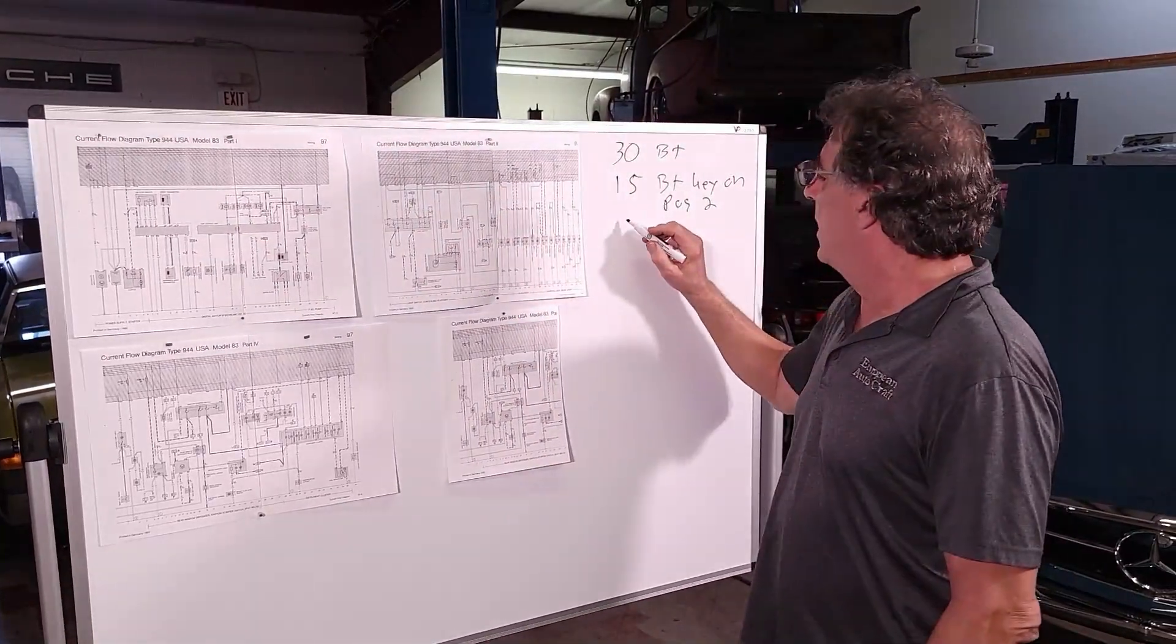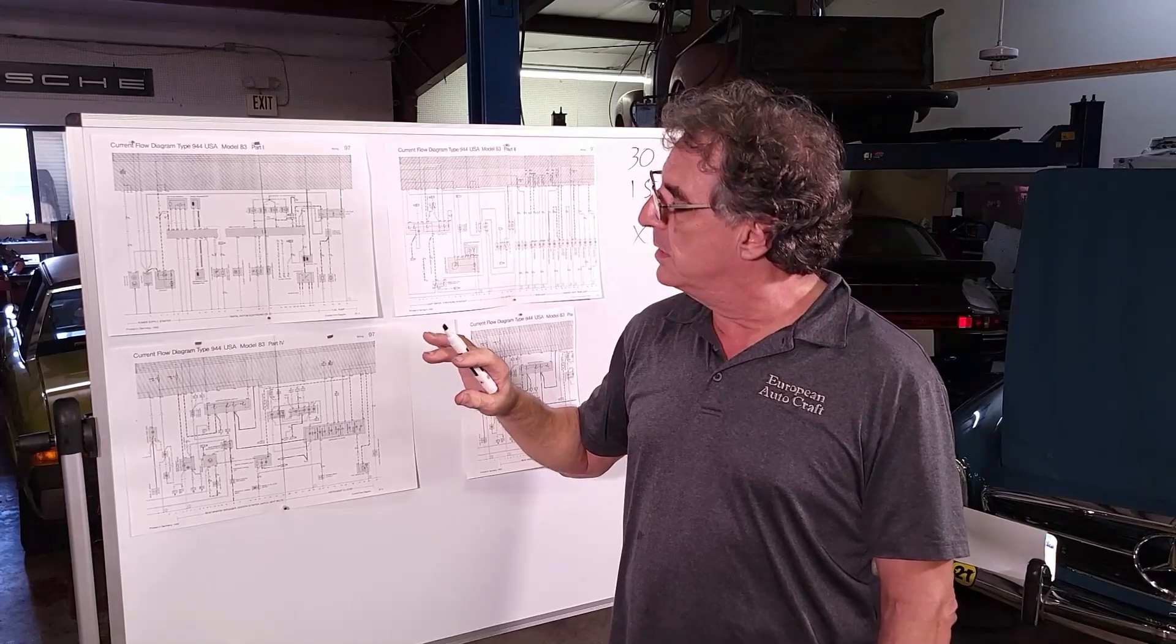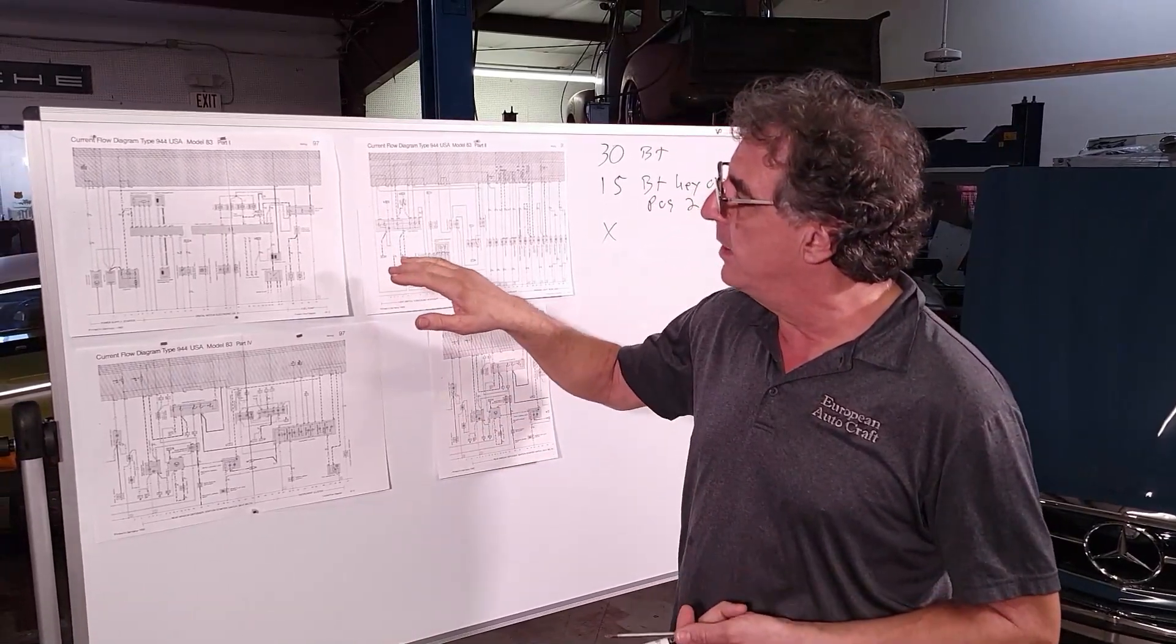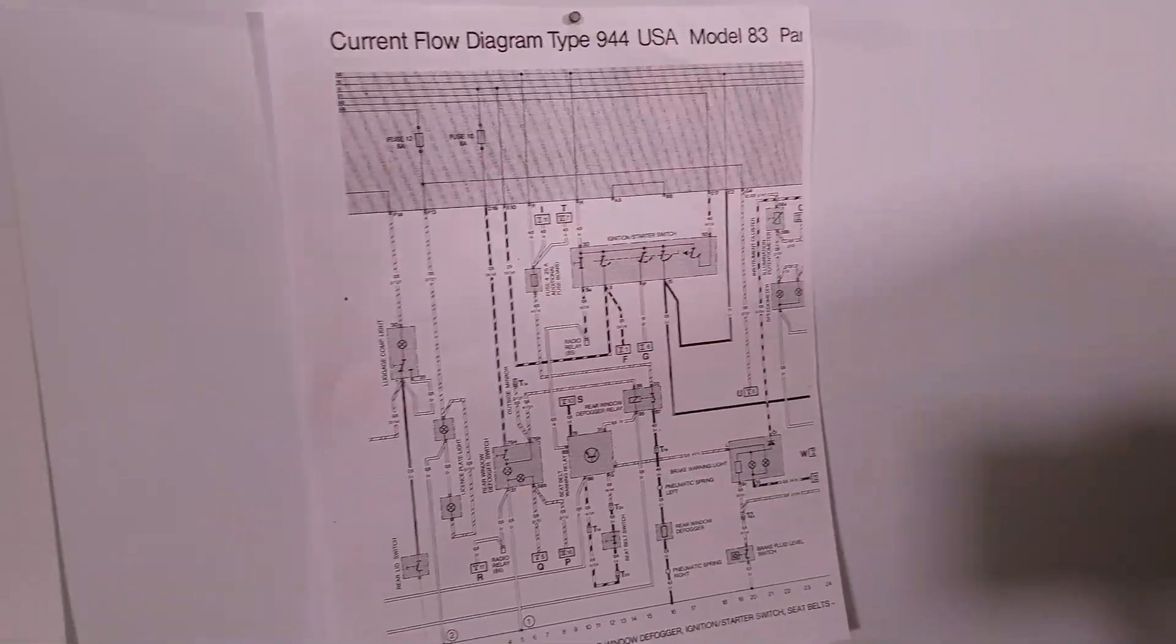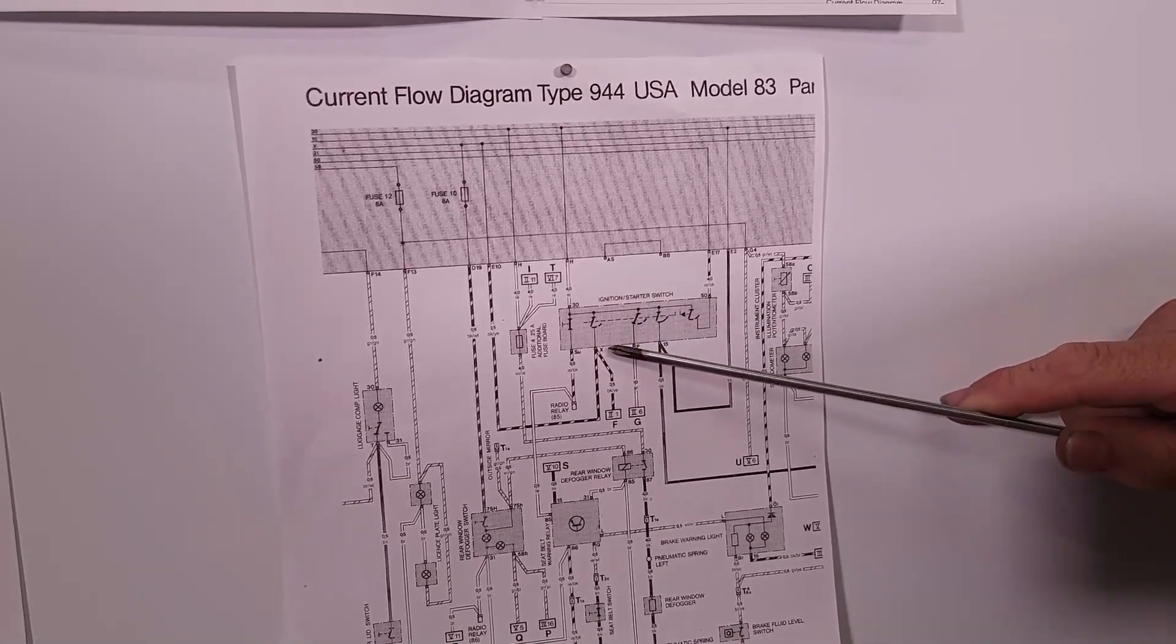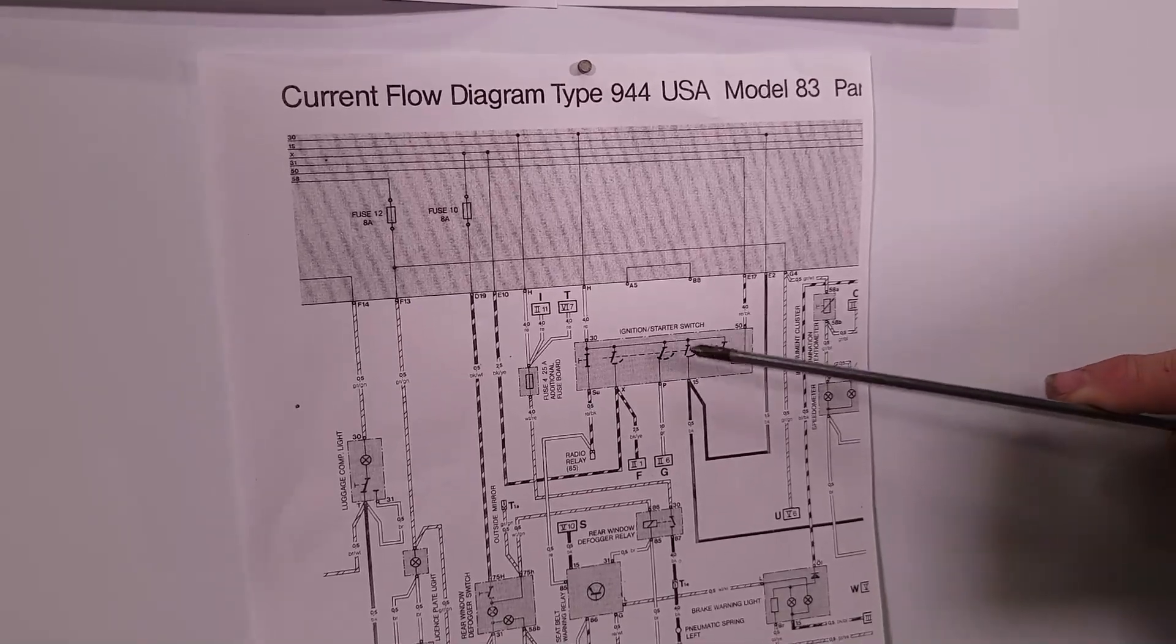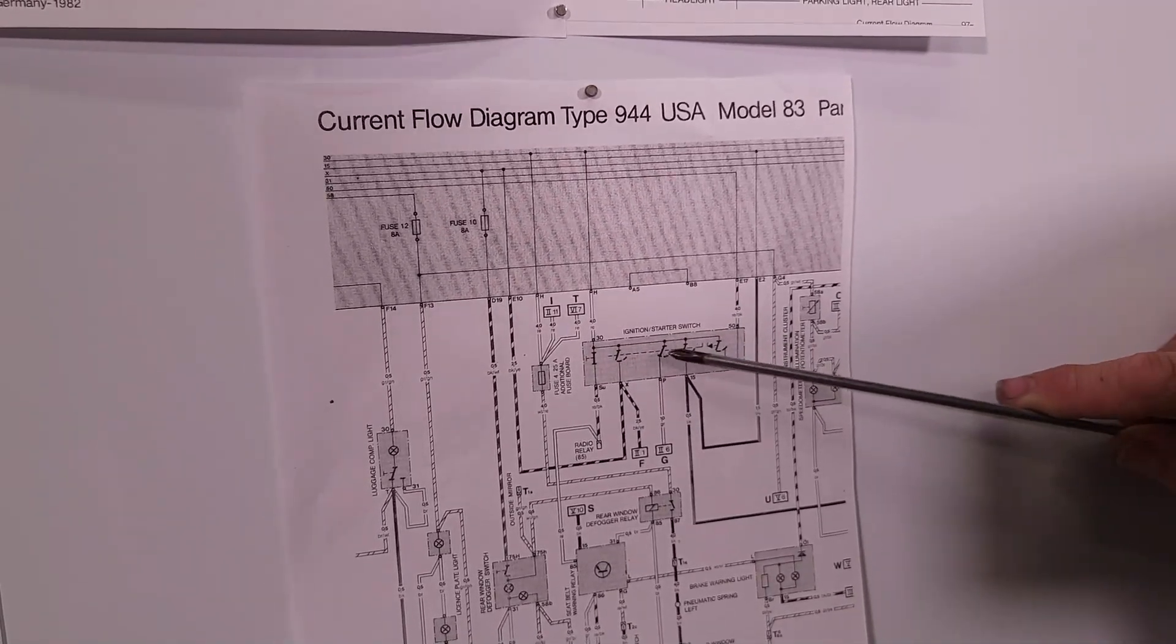The next one is X. X is a load reduction terminal. It's in the fuse relay panel. When the key goes to the start position, this turns off. So any of your heavier consumers in the car, rear window defogger for example, I think the AC blower turns off as well. But if you look closer at it here, you can see my ignition switch, the ignition starter switch. This is off, this is the off position. This is position one. And then this is X, this is the X terminal. So when the key is in the on position or engine running position, this is live. But when you go to the start position, which is here, you can see terminal 50 is on the start side.